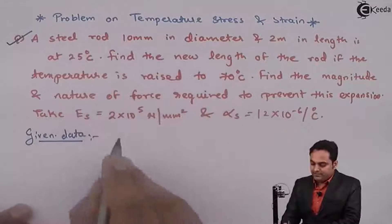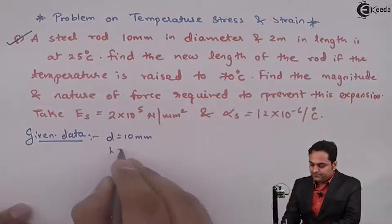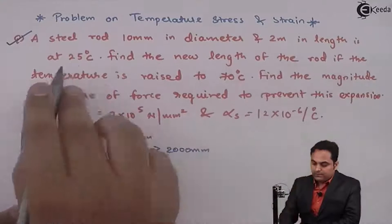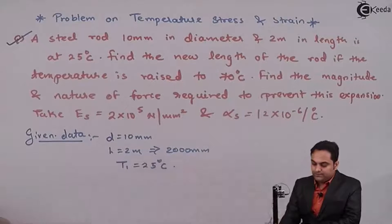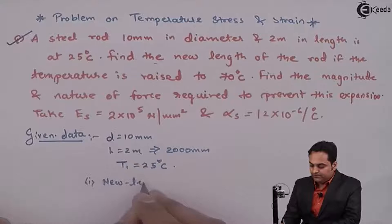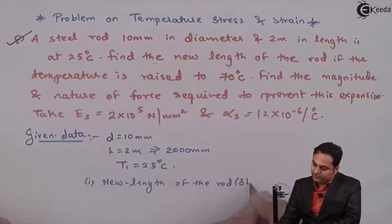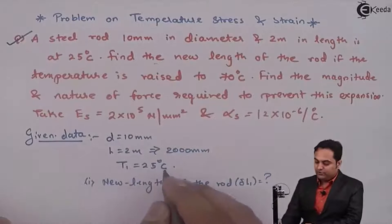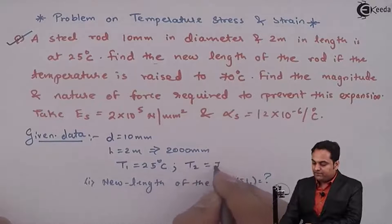Steel rod: diameter D is 10 mm and length is 2000 mm, at an initial temperature T1 of 25 degree Celsius. The temperature is then raised to 70 degree Celsius. We need to find the new length of the rod, which I will denote by delta L1.